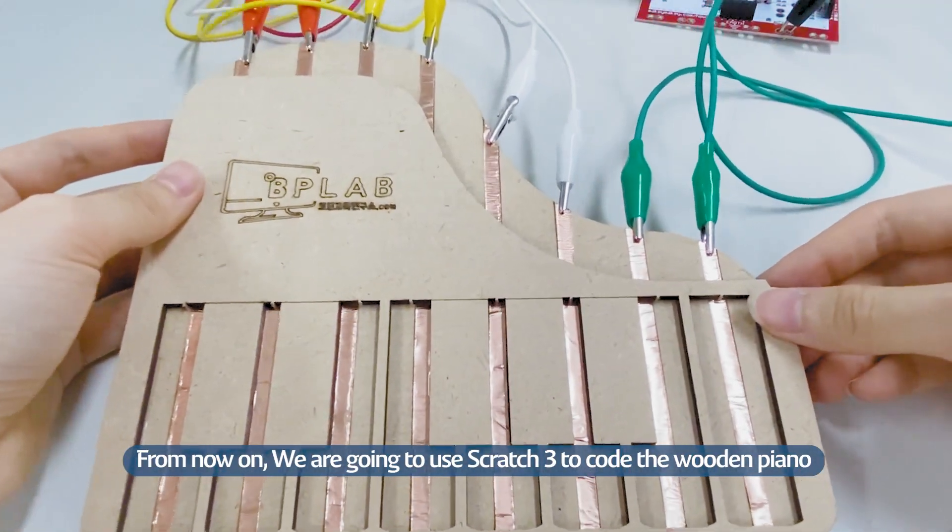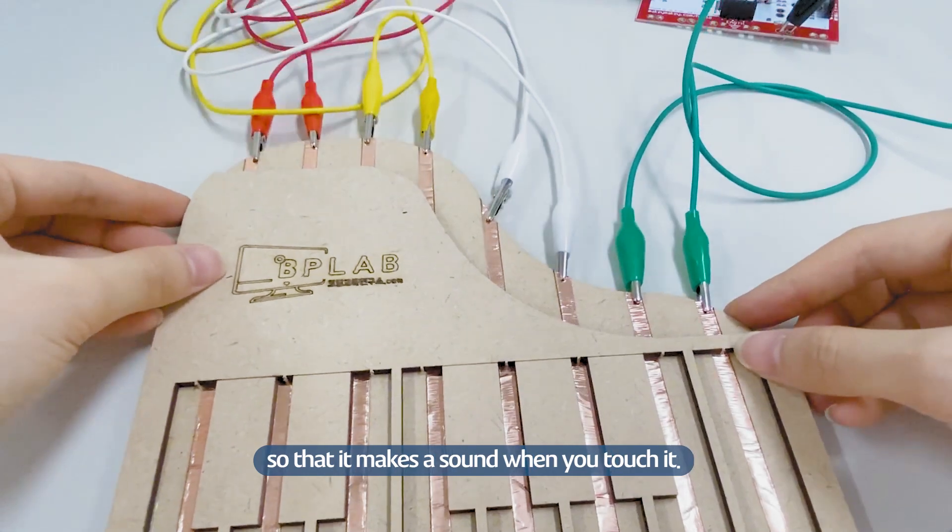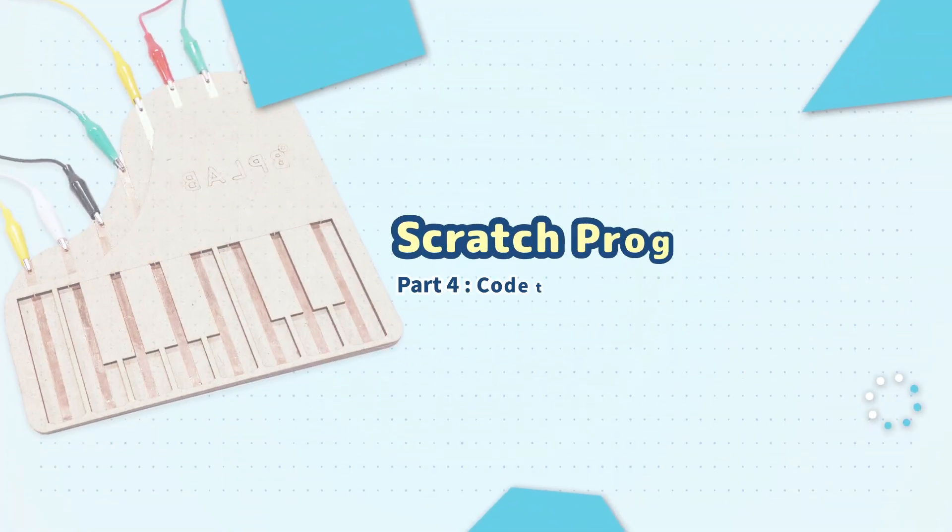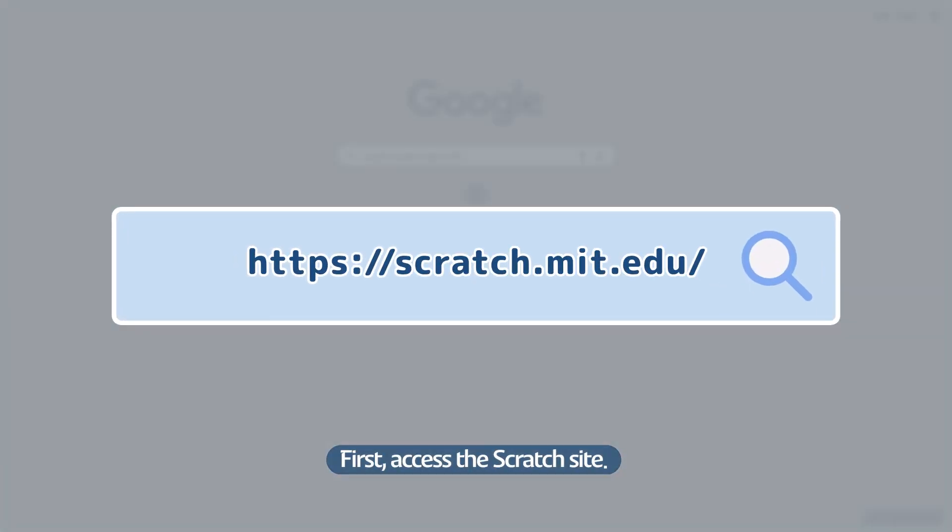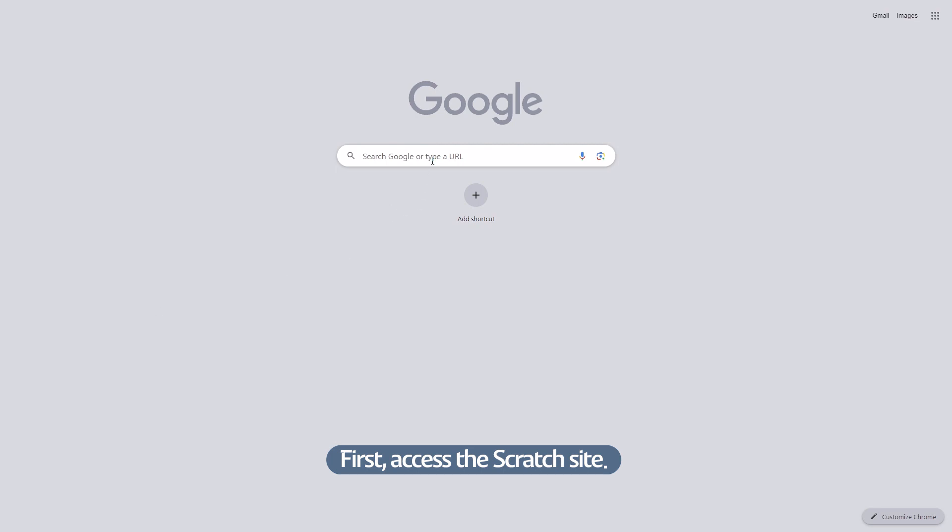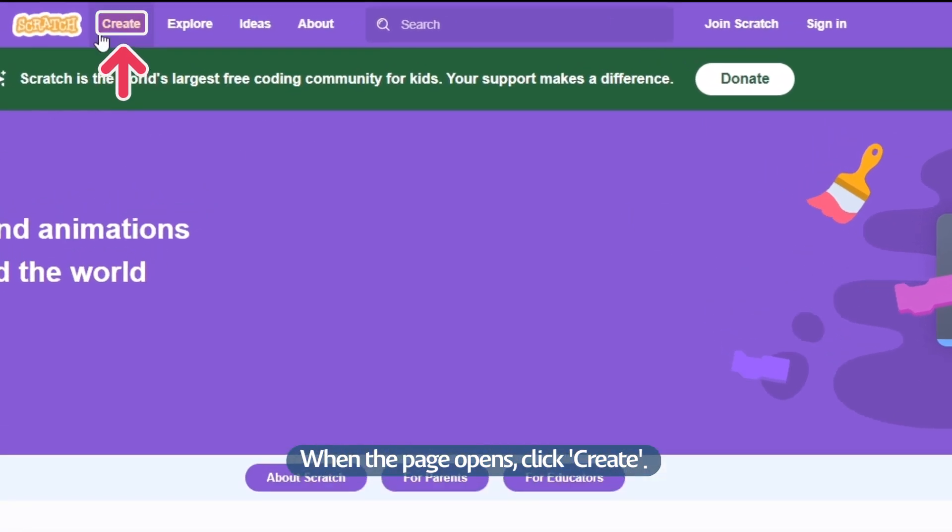From now on, we are going to use Scratch 3 to code the wooden piano so that it makes a sound when you touch it. First, access the Scratch site. When the page opens, click Create.